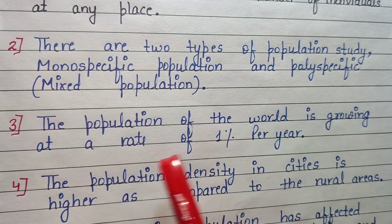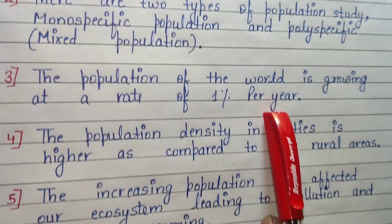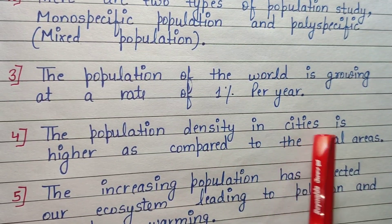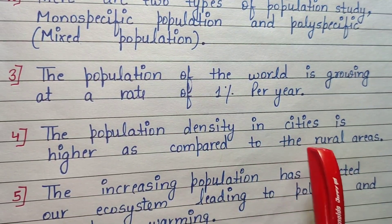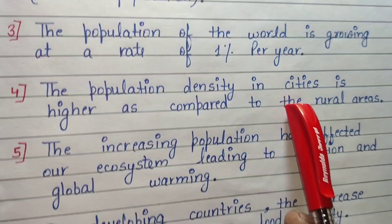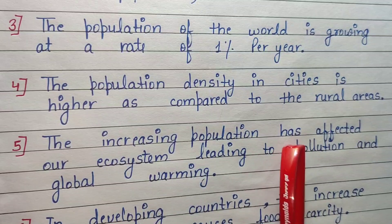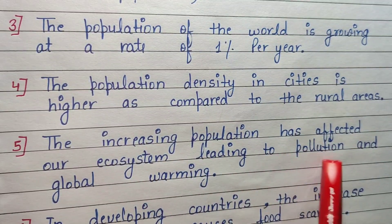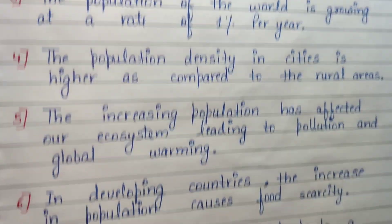The population of the world is growing at a rate of 1% per year. The population density in cities is higher as compared to rural areas. The increasing population has affected our ecosystem, leading to pollution and global warming.